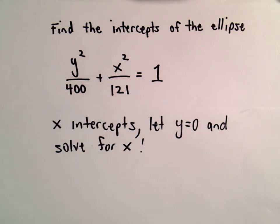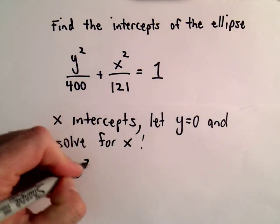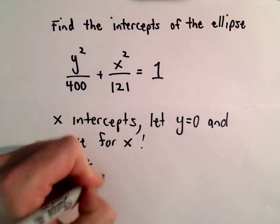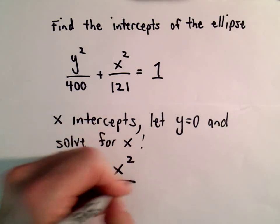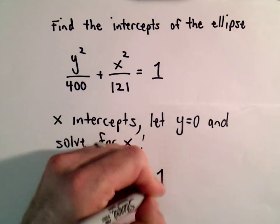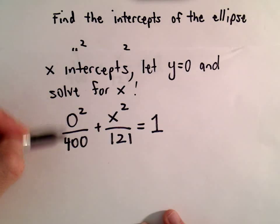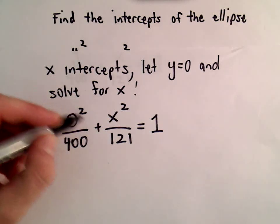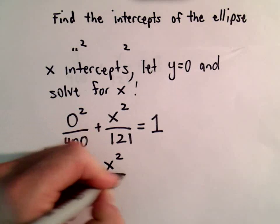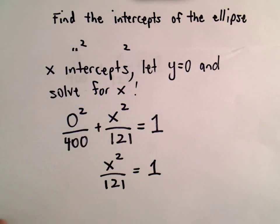So in this case, if y equals 0, we'll get 0 squared over 400 plus x squared over 121 equals 1. Well, 0 squared over 400 is still 0, so all we're really left with is x squared over 121 equals 1.